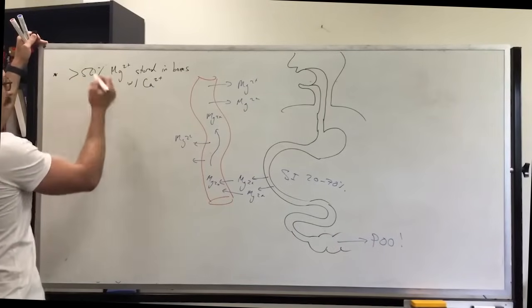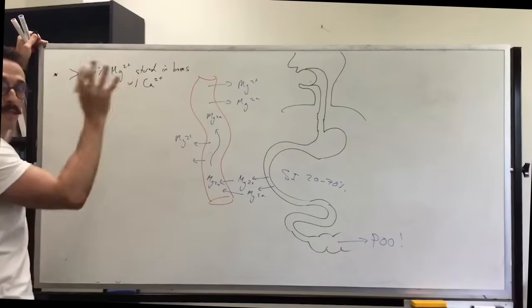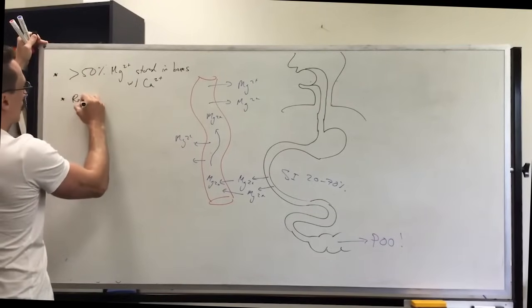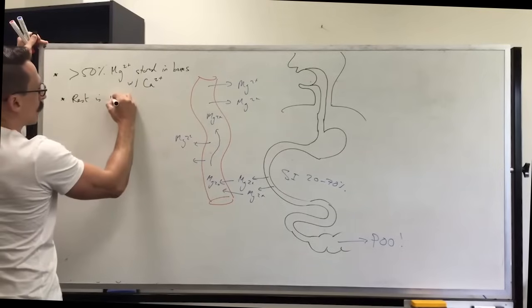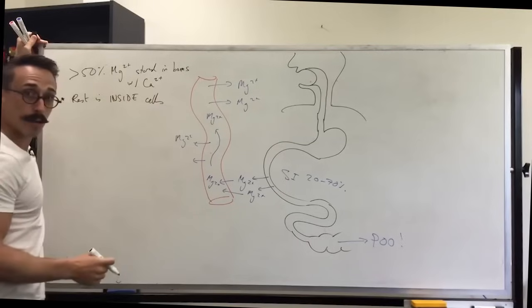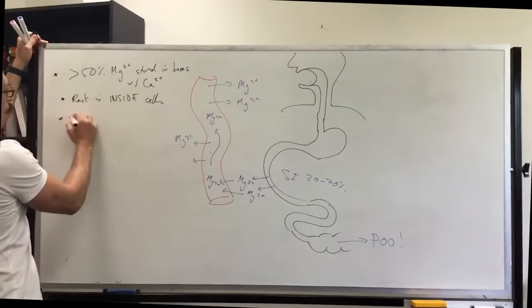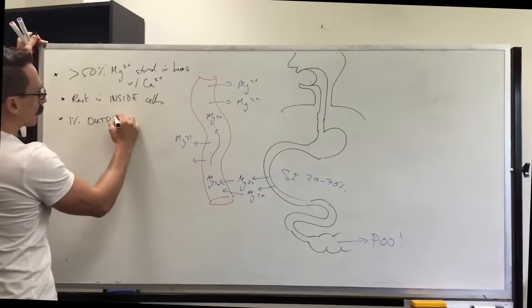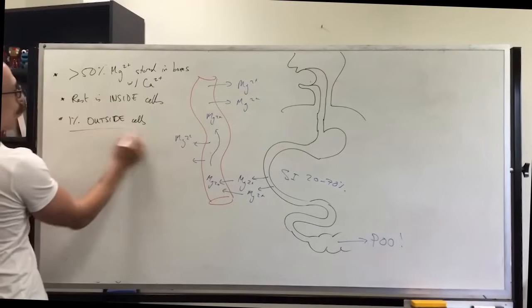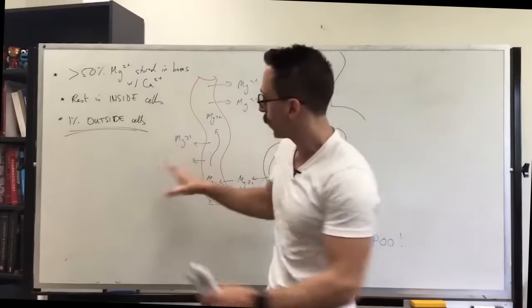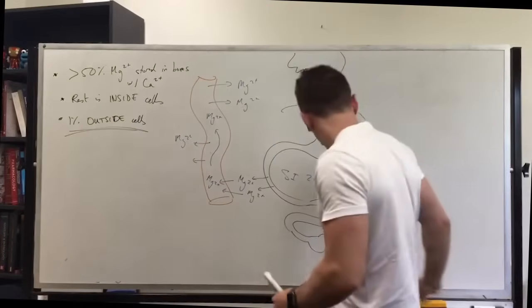Now what you're going to find is the rest of our magnesium stores are sitting inside the cells. The rest is inside the cells of our body. Only one percent sits outside the cells of our body and it's this one percent that sits outside the cells of our body which are really important biologically.